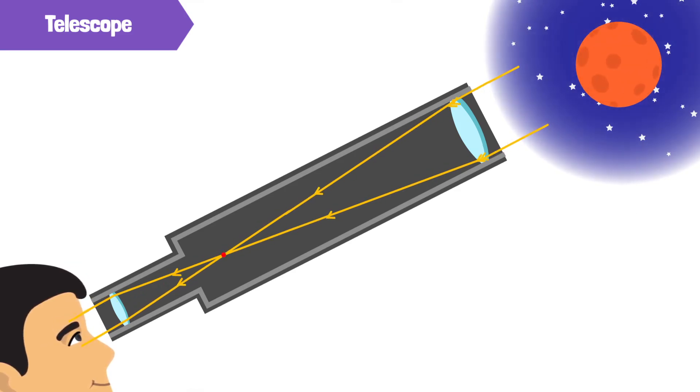They focus it at a point near the other end of the tube. The light forms an image, or picture of the object at this point. The lens, or lenses at this end, called the eyepiece, magnify the image.